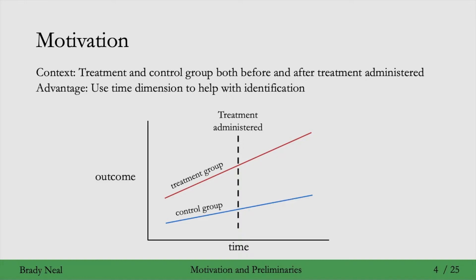The context for difference in differences is a bit different than what we've seen so far. Importantly, there's an aspect of time. We'll still have a treatment group and a control group, but the treatment group won't get treatment until a certain point in time. Here we have the outcome on the y-axis and time on the x-axis. The control group's outcome is going to change over time even though they haven't received treatment at all, unlike the treatment group who will not get treatment until a specific point in time. The treatment is administered at a specific point in time to the treatment group, not to the control group, and we're going to use the fact that we observe these groups over time to help us with identification.